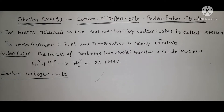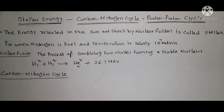To describe this, initially Bethe and Becker scientists gave a cycle named as the CN cycle, that is the carbon-nitrogen cycle. This is a cyclic process. In the sun and stars, the proton-proton cycle is actually observed, but carbon and nitrogen can be used as the catalyst in the carbon-nitrogen cycle.